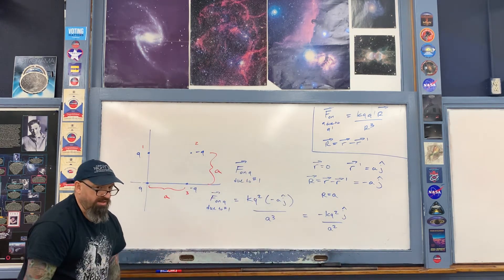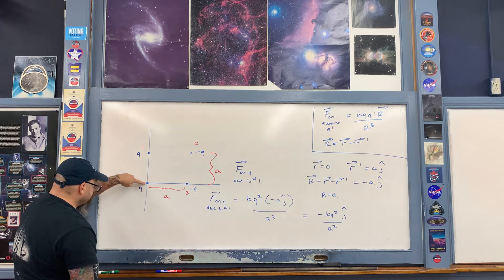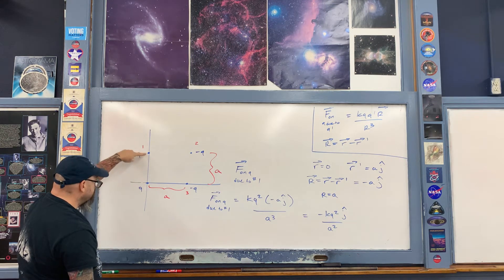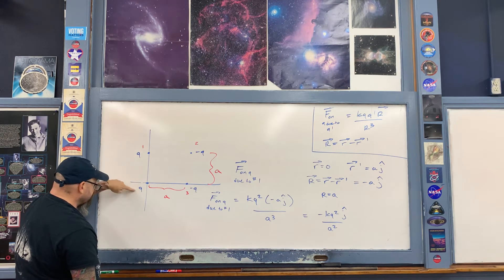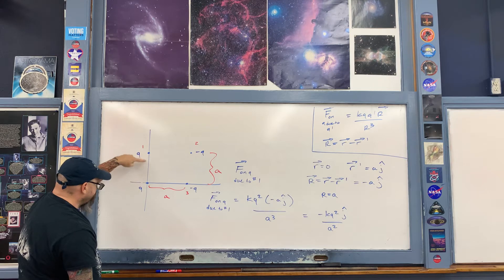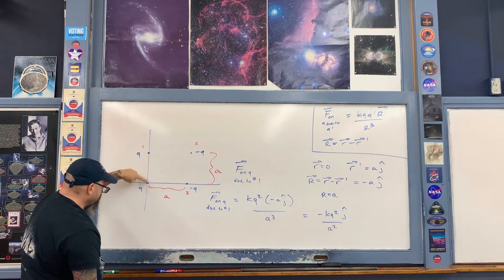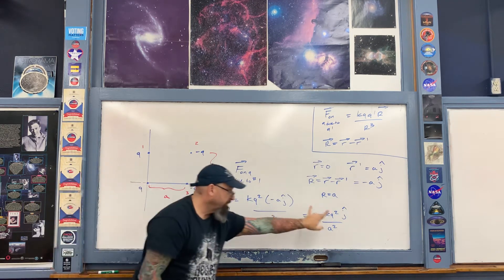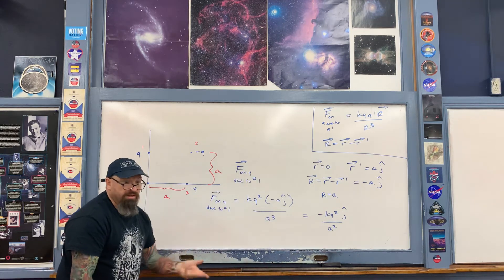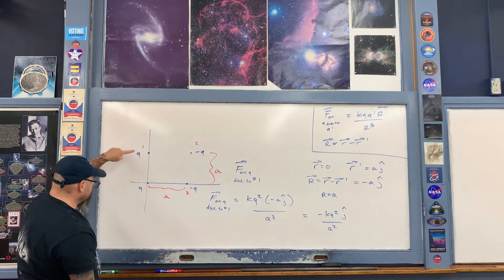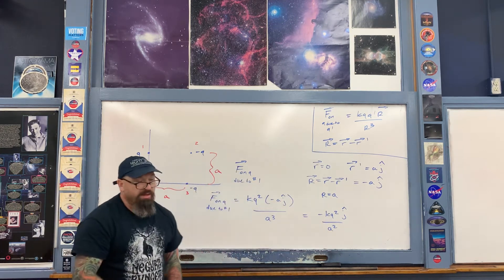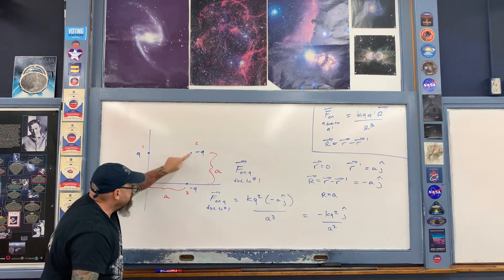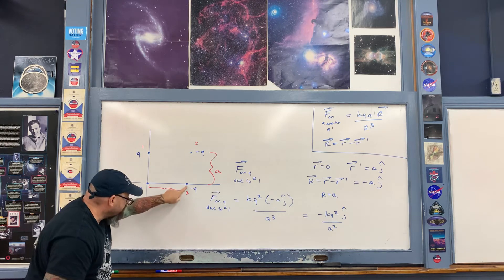Does this make sense? The force on q due to charge 1 is a repulsion because both are positive charges. The force is therefore in the negative j-hat direction, with magnitude kq²/a². The vector notation gives exactly that result. Let's skip charge 2 for now and jump to charge 3.